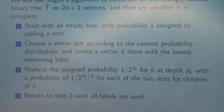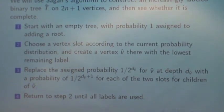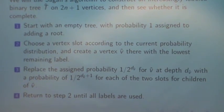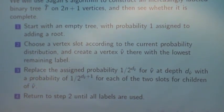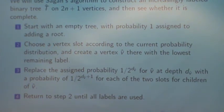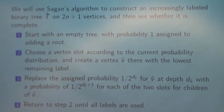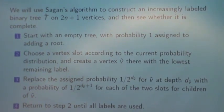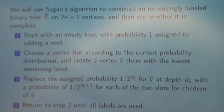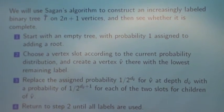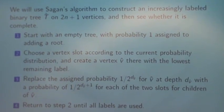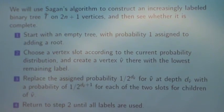Now for Sagan's algorithm for the same problem. We'll use Sagan's algorithm unchanged to generate an increasingly labeled tree on 2n plus 1 vertices, and then see whether it turns out to be a complete tree. So this is really suggested by the relationship between Han's two formulas. This is Sagan's algorithm, and this is actually an unchanged algorithm, except that here the tree is binary. Start with an empty tree and assign a probability 1 of adding a root.